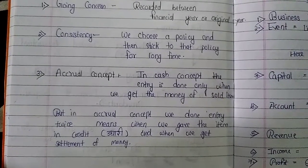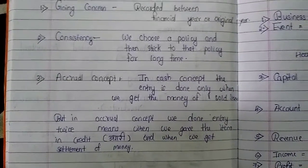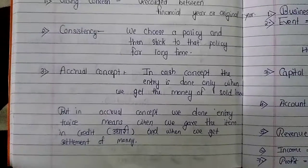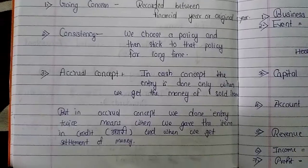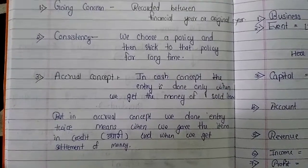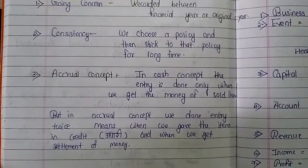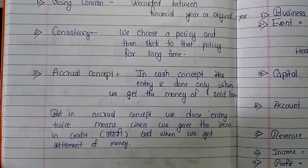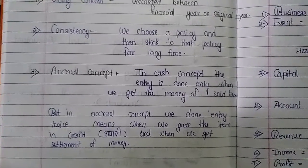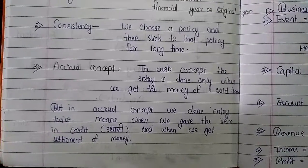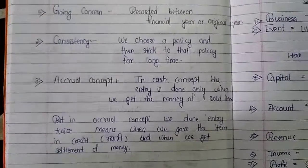The third assumption is the accrual concept. To understand it, you first need to understand the cash concept. In the cash concept, an entry is made only when we receive money for a sold item. But in the accrual concept, the entry is done twice — once when we give the item on credit, and again when we receive the payment.